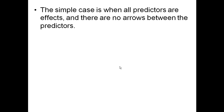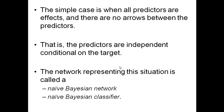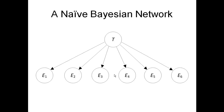The simple case is when all predictors are effects and there are no arrows between the predictors — that is, the predictors are independent conditional on the target. The network representing this situation is called the naive Bayesian network, and when it's used for classification it's called the naive Bayesian classifier. It's a target pointing to a bunch of children with no arrows between the children — perhaps the simplest type of Bayesian network, which is why it's called naive.